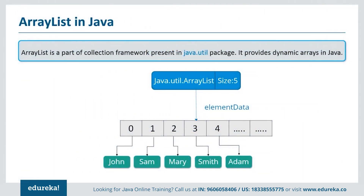ArrayList is a part of the collections framework and is the implementation of the List interface, where elements can be dynamically added or removed from the list. Also, the size of the list is increased dynamically if elements are added beyond the initial size. Though it may be slower than standard arrays, it can be very helpful in programs where lots of manipulation of the array is required.